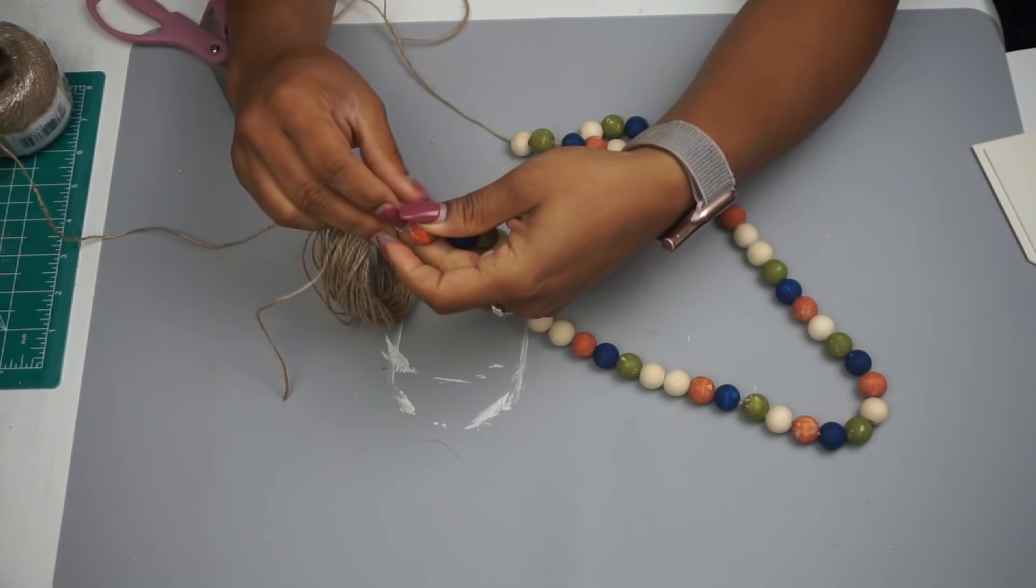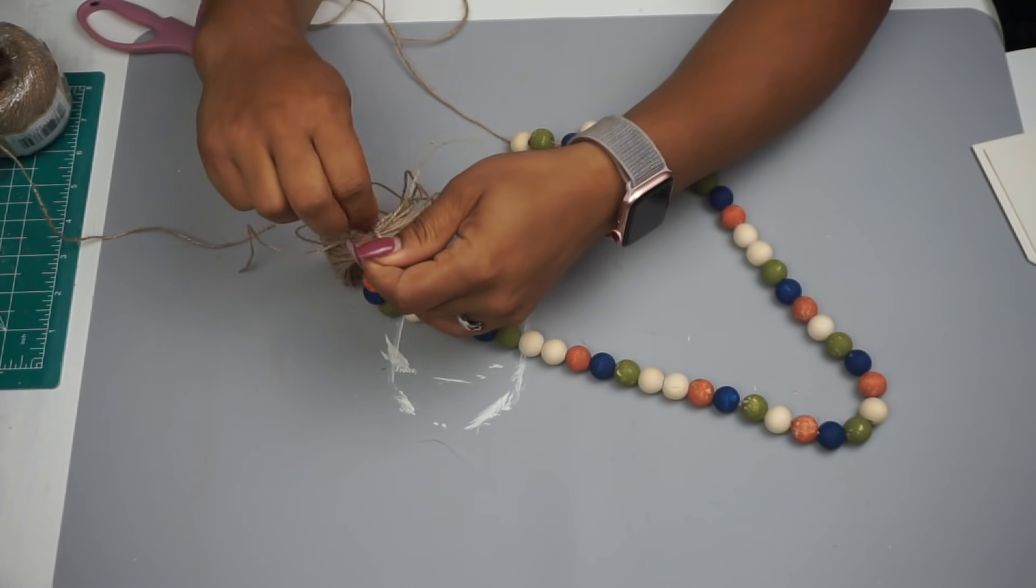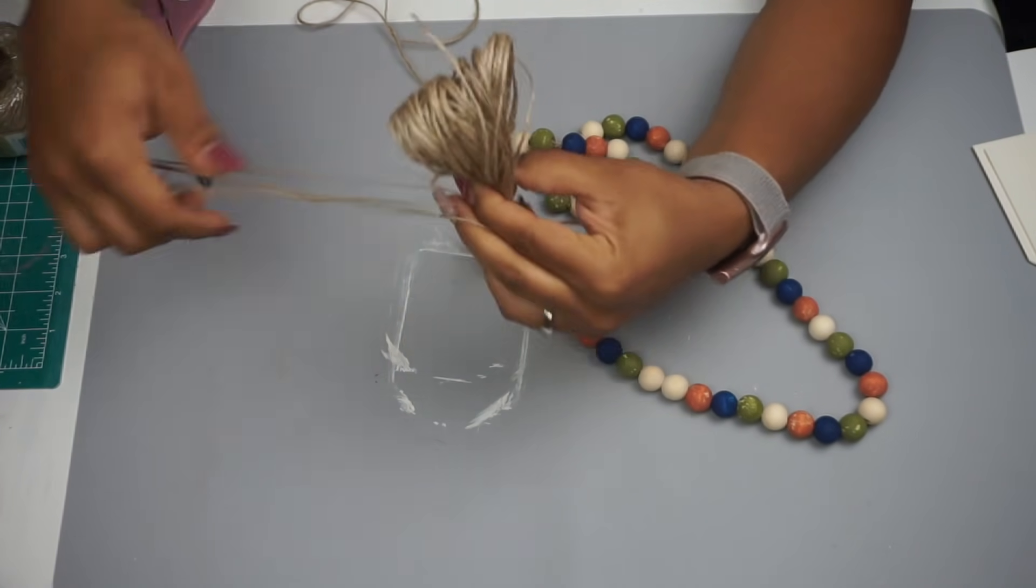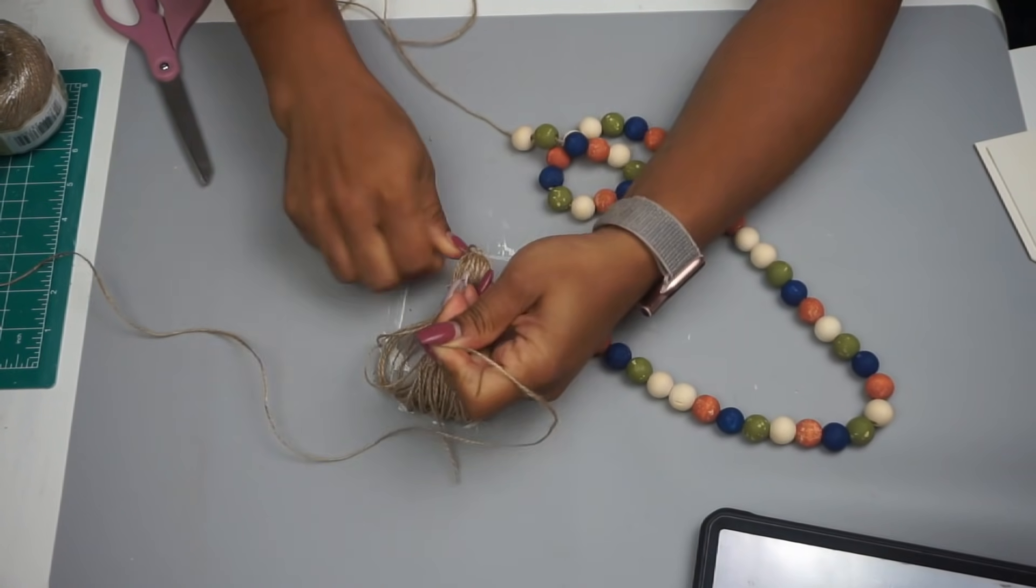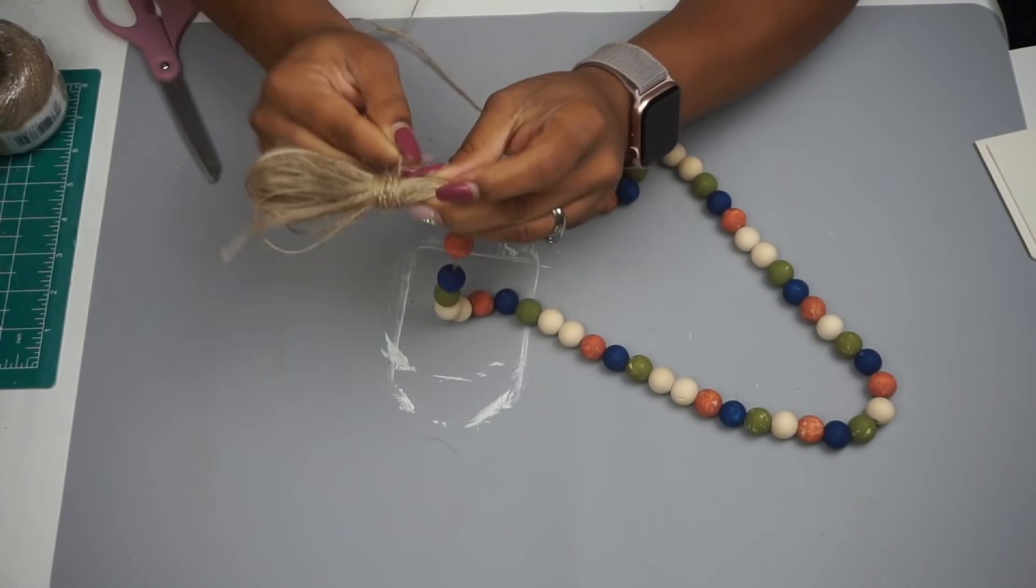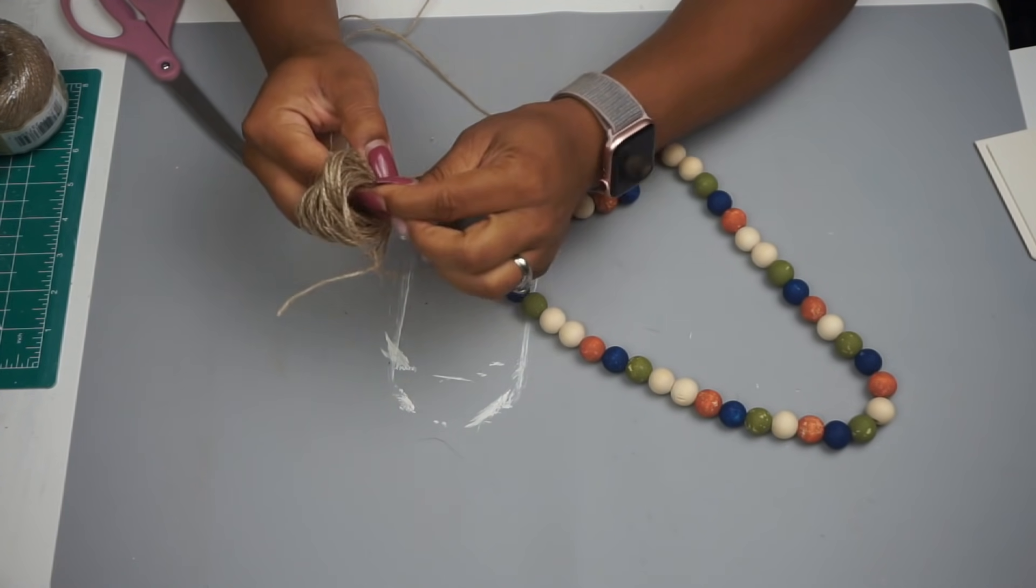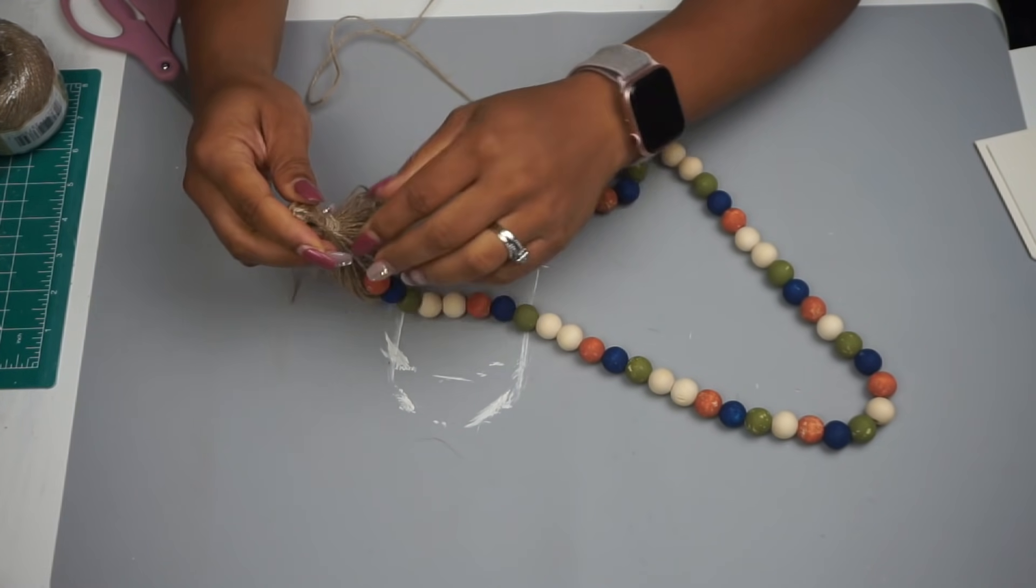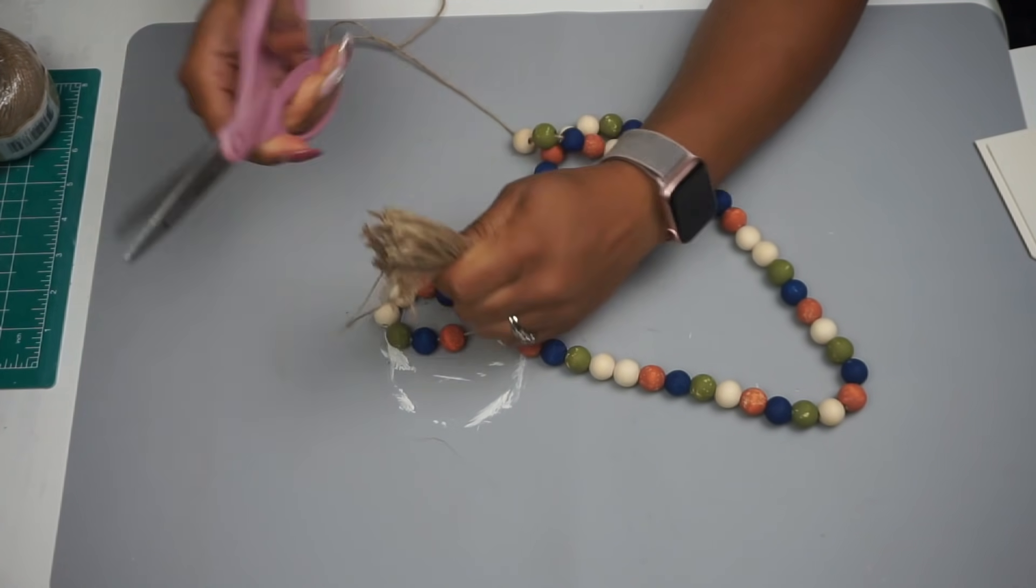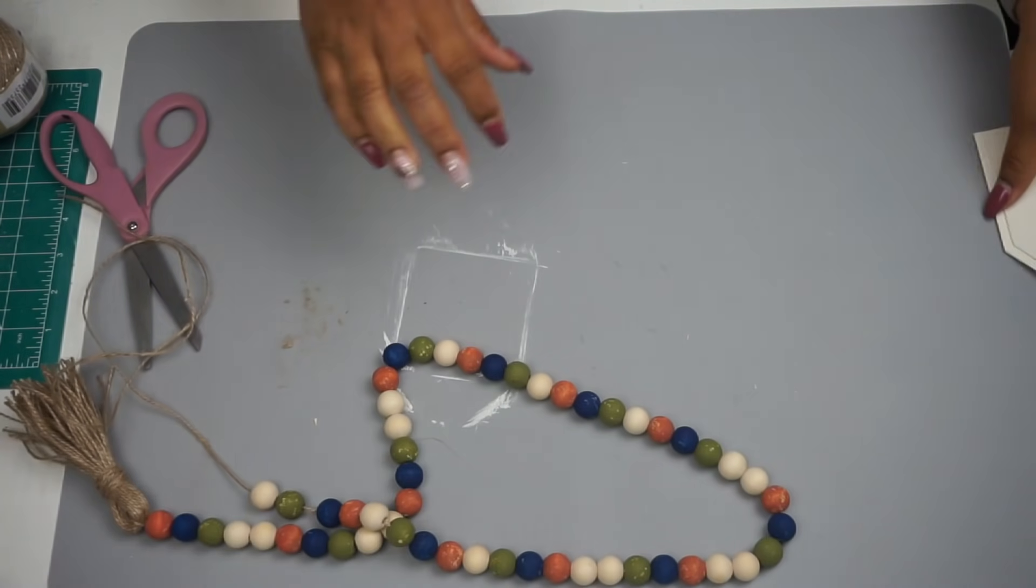And so, then I am making a tassel using that same jute twine. I just wrapped it around my hand probably about 20 times. And then tied it at the top with the piece of twine that's already hanging. And then used another piece to tie off the top knot part. And then wrapped that around so I could get my tassel look. And then there's a few different ways you can do this. You can hot glue it down or you can tie it down. I usually like to just tie it down. I don't really like using a lot of hot glue when I do tassels.